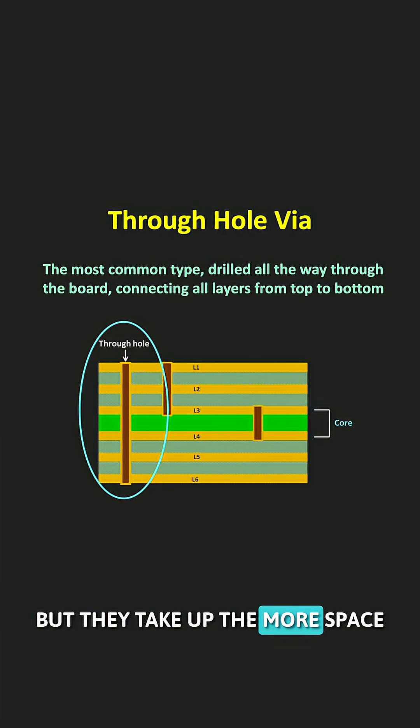But they take up more space on all layers. In very complex and dense routing where even a millimeter space matters, to connect the different layers, either blind or buried Vias are used.